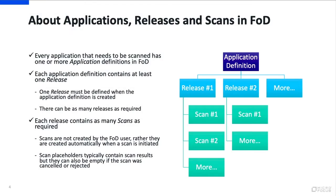Every application that you need to scan in FOD has to have an application definition — in fact, at least one application definition. Each application definition contains at least one release; that's where your scan results go into. Each release will have a number of scans, so as you're developing version 1.0, you're going to scan it many times, maybe nightly within your CI pipeline.